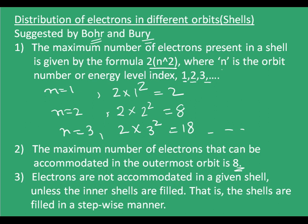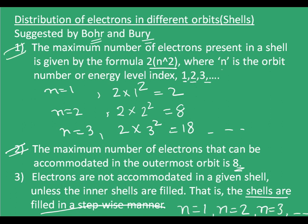The maximum number of electrons that can be accommodated in the outermost orbit is 8. Electrons are not accommodated in a given shell unless the inner shells are filled — that is, the shells are filled in a stepwise manner: first n=1 will be filled, then n=2, then n=3, and so on. These were the rules for the distribution of electrons in Bohr's model.